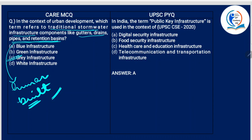Previous year question: In India, the term 'public key infrastructure' is used in the context of — by looking at the term 'public' in the first instance you will definitely mark the answer wrong, thinking of public welfare or public schemes. But public key infrastructure deals with digital security infrastructure, because public key and private key are two components of encryption and decryption technology.